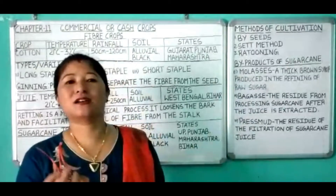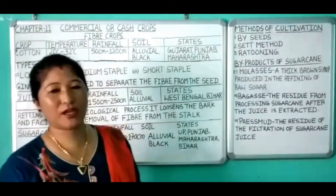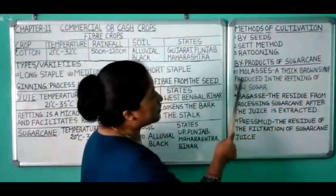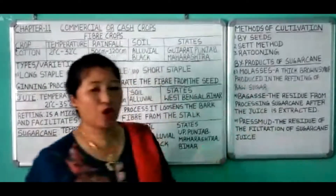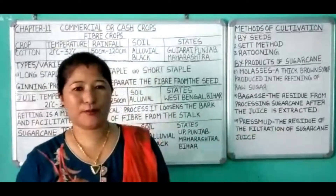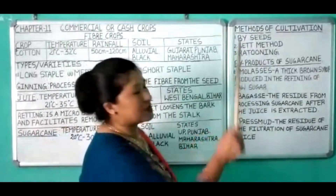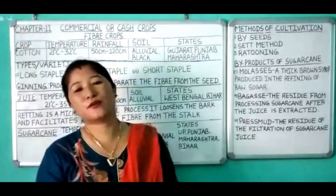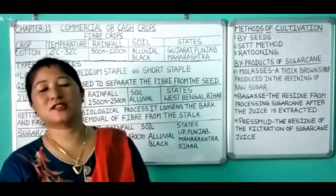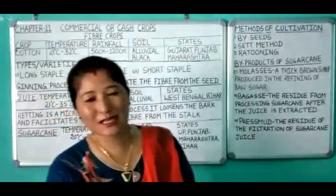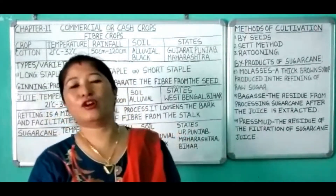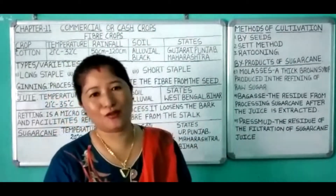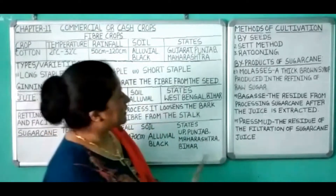Molasses is a dark colored, thick brown syrup which is produced in the refining of raw sugar. The uses of molasses include: it is used for making fertilizer, it is used in the distillation of alcohol, and it is also used in the making of synthetic rubber.